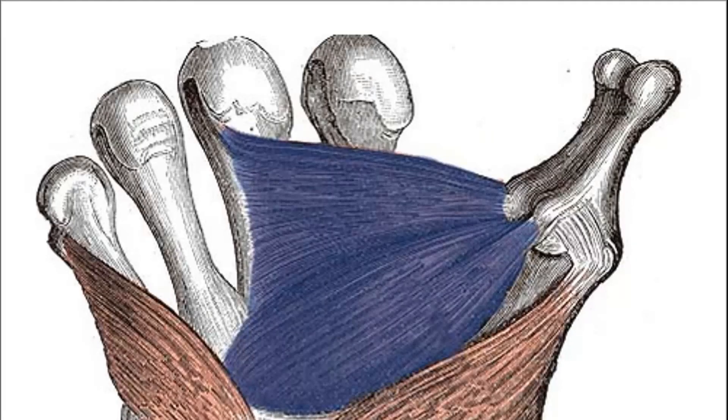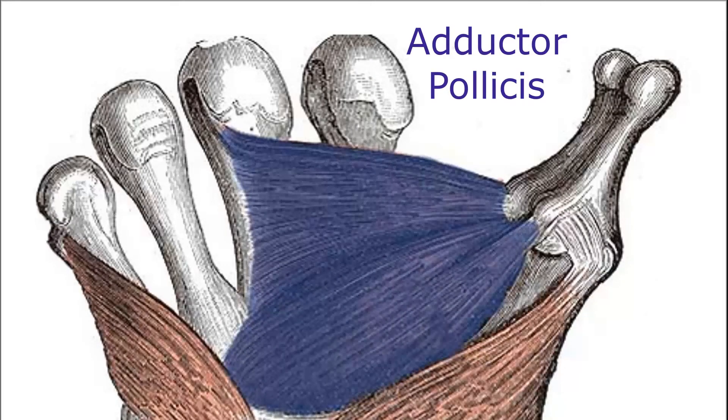The muscle in blue is known as the adductor pollicis, but it is not counted as a thenar muscle.